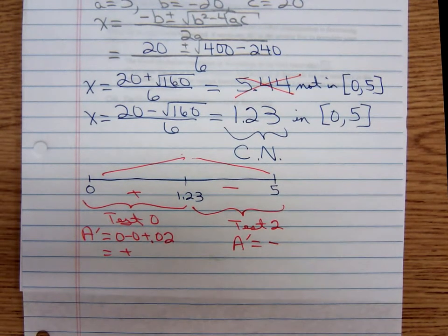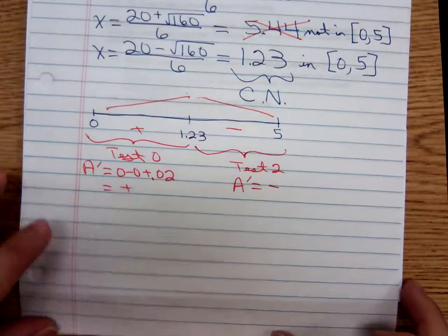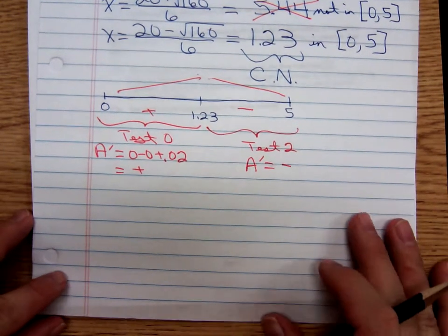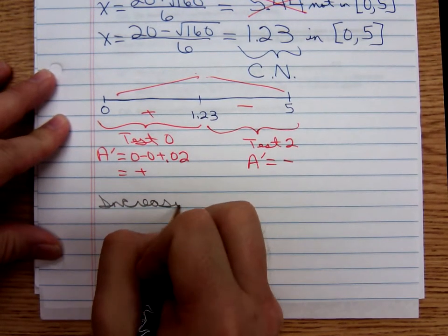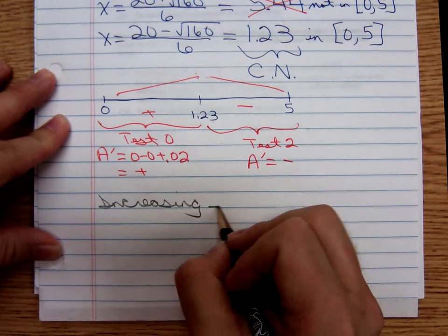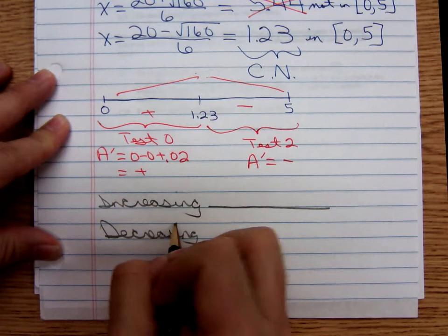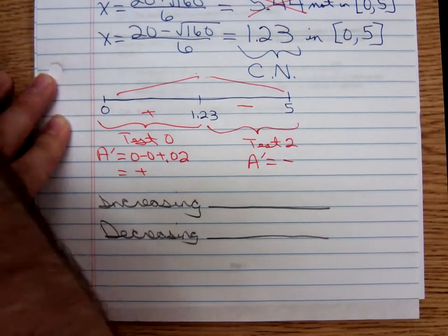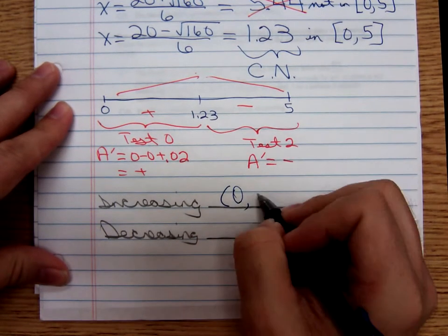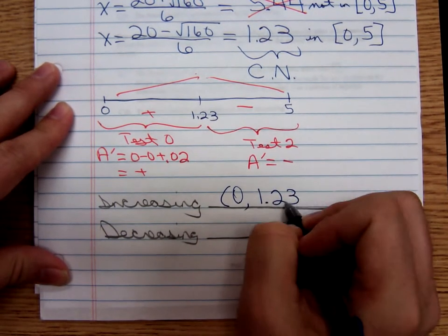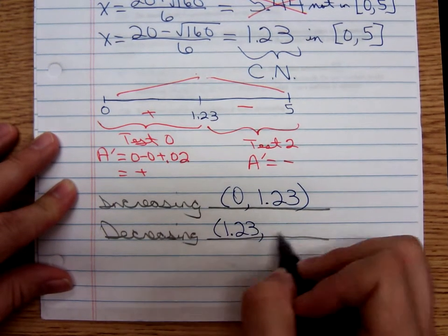So they ask us when is the function increasing and when is it decreasing. So I'm going to write down increasing. And remember we're defining increasing and decreasing intervals in terms of open intervals, the textbook author. So we're going to say the function is increasing on the open interval from zero to 1.23 and then it's decreasing on the open interval from 1.23 to 5.